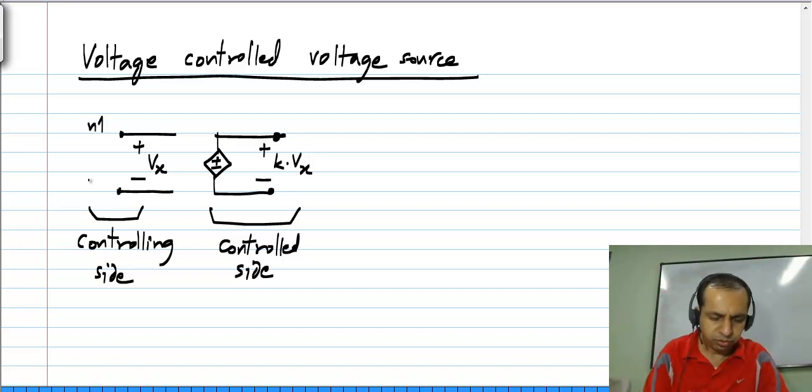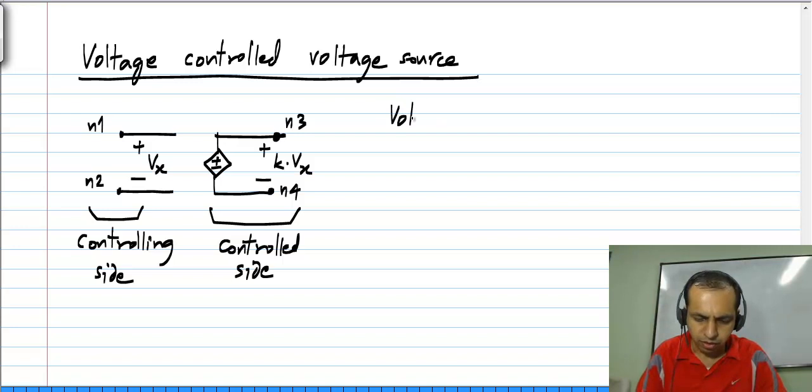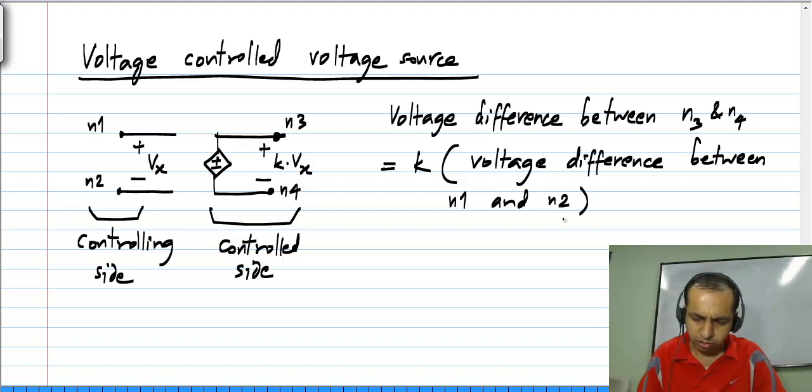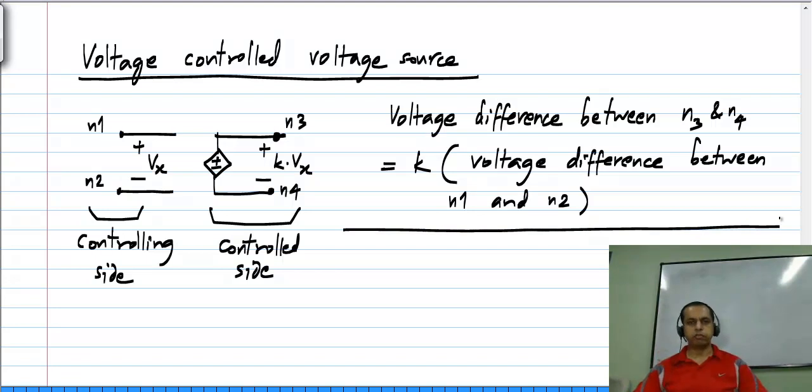This k is the property of the voltage controlled voltage source. If I label these nodes N1, N2, N3 and N4, what this says is voltage difference between N3 and N4 equals k times the voltage difference between N1 and N2. That is the meaning of the symbol.